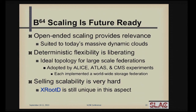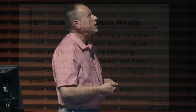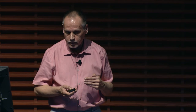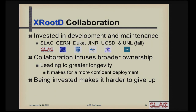Today we find that ALICE, ATLAS, and CMS have these huge storage federations that allow them to access data worldwide. Selling scalability is really hard unless you actually see you need it and understand the context — but this system does it in a relatively nice and easy-to-see way. The other crucial element was investment. The way to get investment is to provide people a sense of ownership, so we formed collaborations with various institutions that were invested in prolonging, maintaining, and developing the product. That certainly increased the longevity — because once you're invested, it's very hard to give it up.